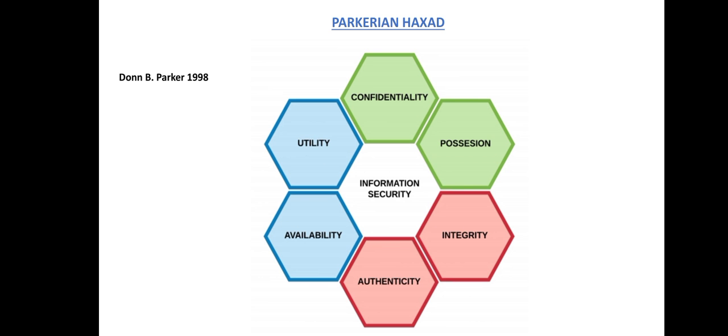In this video, I will talk about the Parkerian Hexad of information security, which was introduced by Don B. Parker in 1998. He added three more elements to the traditional CIA triad, where C stands for confidentiality, I stands for integrity, and A stands for availability.